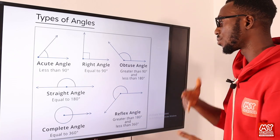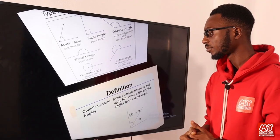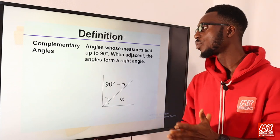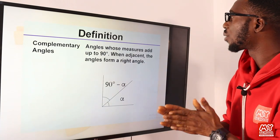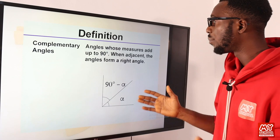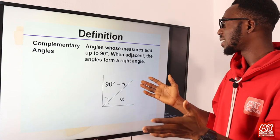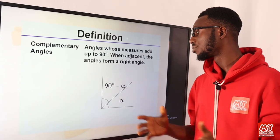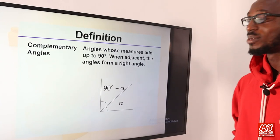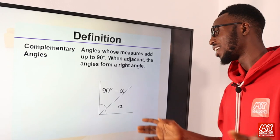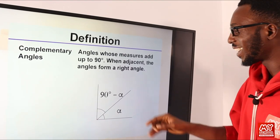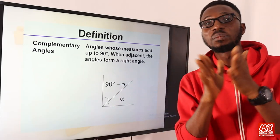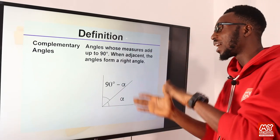Let's see broader views regarding angles. We have complementary angles. What are complementary angles? Complementary angles are angles that, when you measure them, add up to 90. When adjacent, the angles form a right angle. Complementary angles actually add up to 90 degrees.